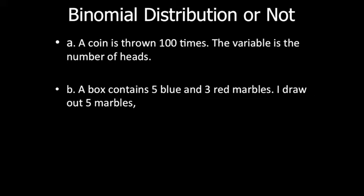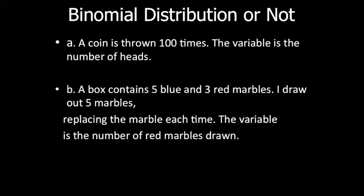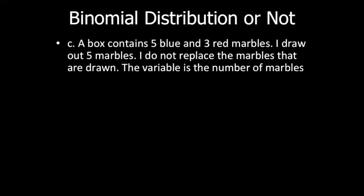Example b: A box contains five blue and three red marbles. I draw out five marbles, replacing the marble each time. The variable is the number of red marbles drawn. This is binomial because we can draw a red or blue marble with the same chances each time due to replacement.